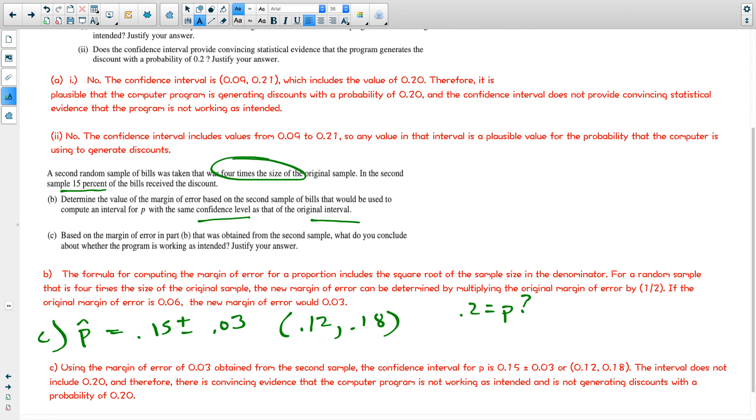Let's write that out. Using the margin of error of 0.03 obtained from the second sample, the confidence interval for P is 0.15 plus or minus 0.03, or 12 to 18%. This is what we got. The interval does not include 20. Therefore, there is convincing evidence that the computer program is not working because 0.2 is not contained in that interval.